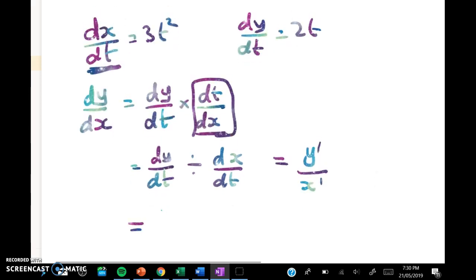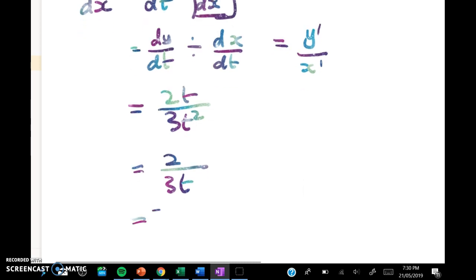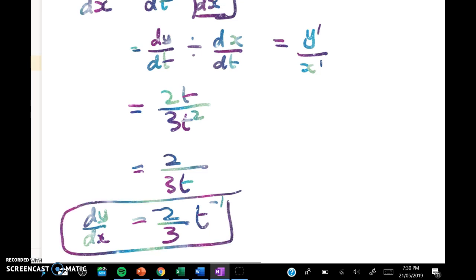In this case that gives me 2t over 3t² and we can clean that up a bit and we get 2 over 3t and it's going to be useful to write that as 2 thirds of t to the negative 1. So that's dy/dx. That's the first thing we need.